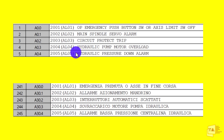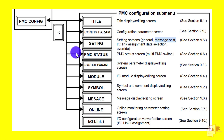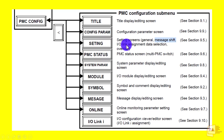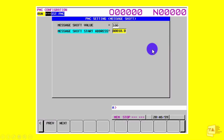In FANUC CNC machine, if you go to PMC Configure, there you can find the Setting option. In that setting we can find the message shift option. Using this option we are going to achieve displaying different types of languages in our alarm message. This is the window — if you go to the setting window and press message shift, the window will show message shift value and message shift start address.